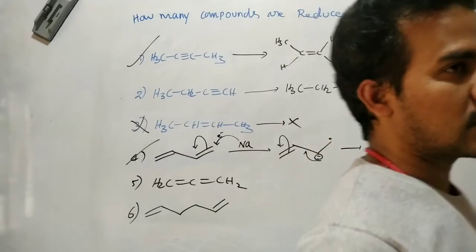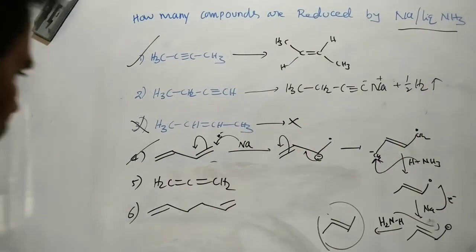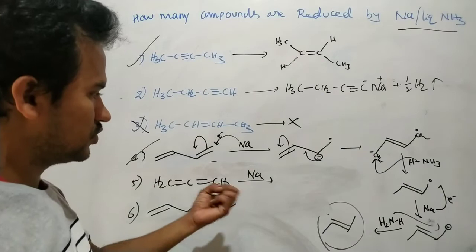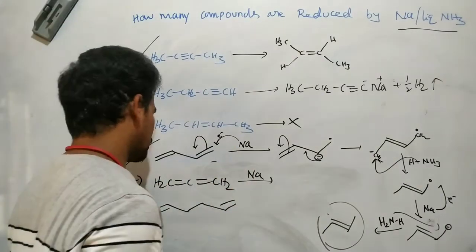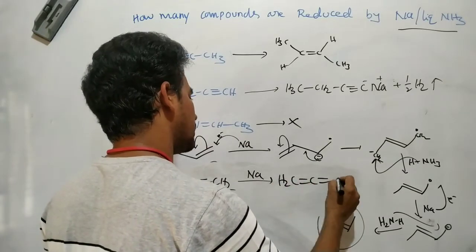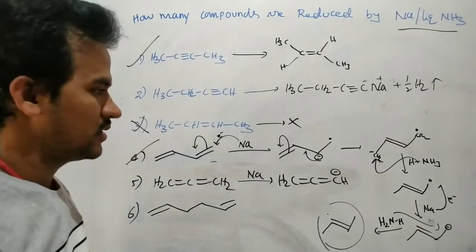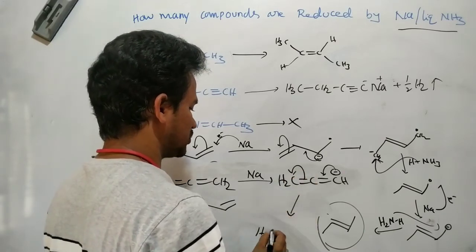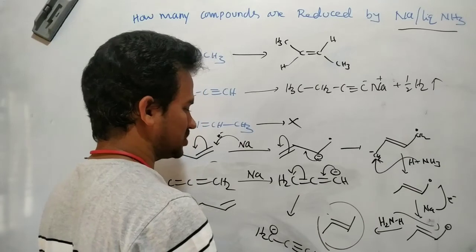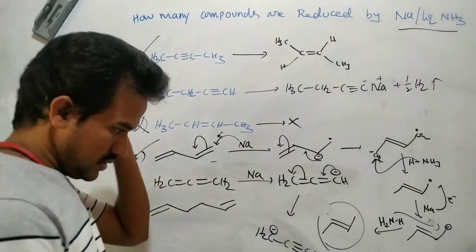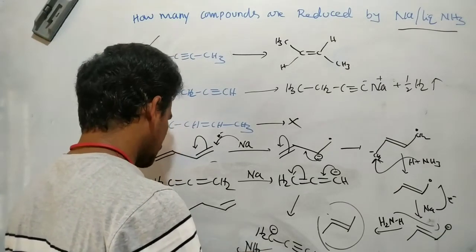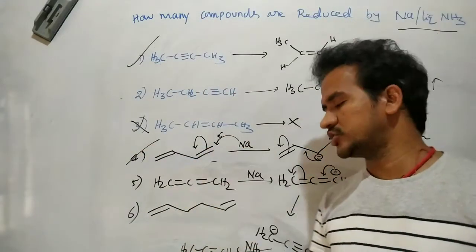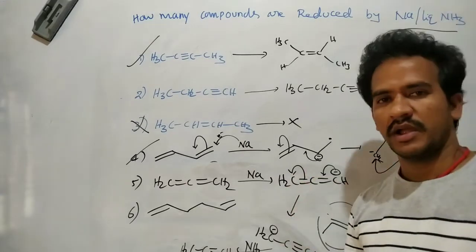Now here is propadiene — an allene compound. With sodium liquid ammonia, sodium acts as a base and removes the acidic proton of the allene. As a result we get CH2=C=CH⁻. By resonance, this becomes CH2⁻–C≡CH. This anion then accepts a proton from the ammonia, so propadiene is converted to 1-propyne.